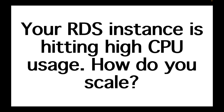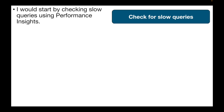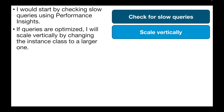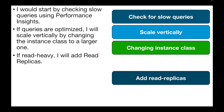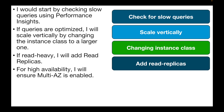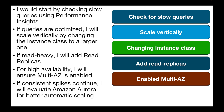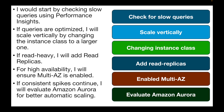The next question is: your RDS instance is hitting high CPU usage. How do you scale? Start by checking for slow queries causing the issue using Performance Insights. If queries are optimized, scale vertically by changing to a larger instance class. If it's a read-heavy database, consider adding read replicas. Ensure Multi-AZ is enabled for high availability, and if consistent spikes continue, consider migrating to Amazon Aurora for better automatic scaling.